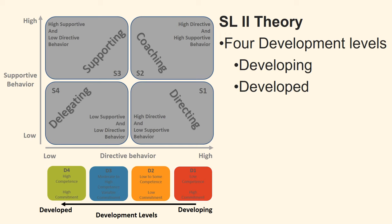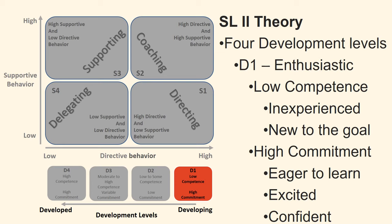Development level 1: the employee is an enthusiastic beginner. The employee has low competence — they are new to the goal or task and therefore inexperienced, and doesn't know what he or she does not know. The employee has high commitment: they are excited and eager to learn, and confident that learning won't be difficult.